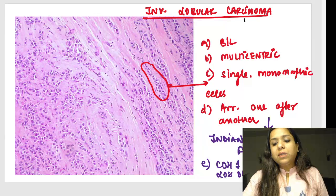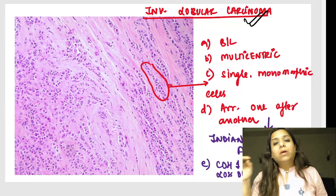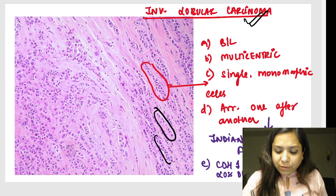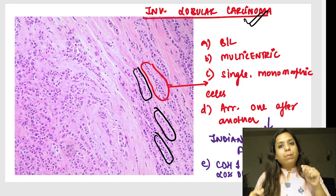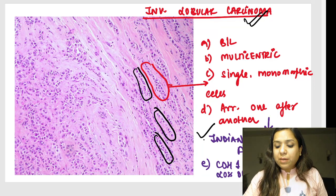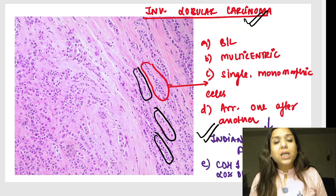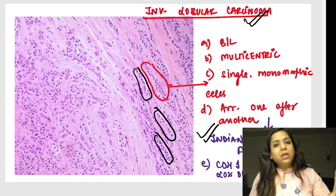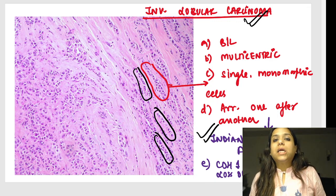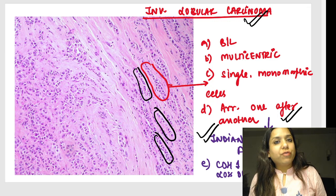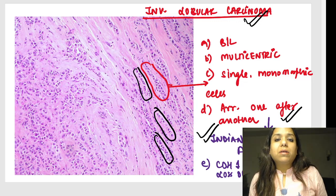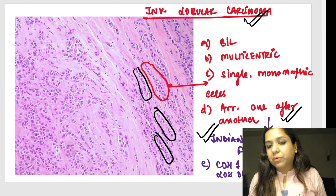Lastly, invasive lobular carcinoma slide can definitely be given in exams. Appreciate that the cells are going one after another — like army people marching in a line. This pattern is called a single file pattern or Indian file pattern. In an MCQ, single file or Indian file pattern as seen in — answer is invasive lobular carcinoma. If the history mentions bilateral, multicentric breast carcinoma, start thinking lobular cancer. These monomorphic cells have no adhesion between them.